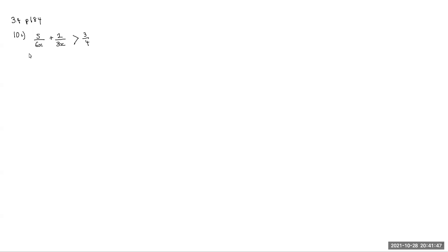By request, this is from page 184, that's chapter 3.4, number 10c. It's an inequality where I have two fractions adding, and it's going to always be greater than 3 over 4. And the question just says solve, which as we know means find the x value that makes this true.